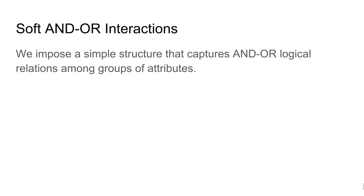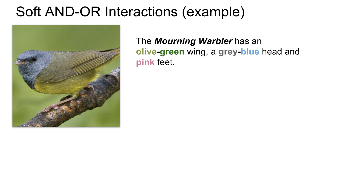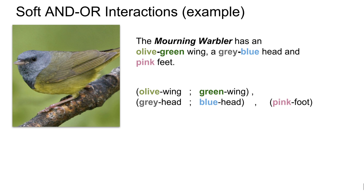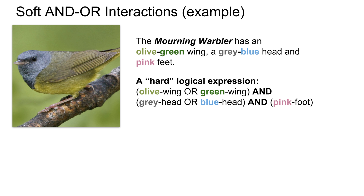Our structure captures AND-OR logical relations among groups of attributes. For example, this warbler can be distinguished by a combination of olive-green wings, grey-blue head, and pink feet. These attributes are semantically related and naturally cluster into corresponding groups, like the group of various wing colors in this example. In addition, humans or machines may confuse similar attributes because a perceptual property may be mapped to several attributes. For example, the wing color of this warbler is described as either olive or green. Therefore, the structure we propose joins attributes to groups and applies an OR relation within groups. Then, for combining the groups, it is natural to apply an AND, since a class is often recognized by its necessary properties. This yields a simple AND-OR description for a class that appears natural for this type of data.